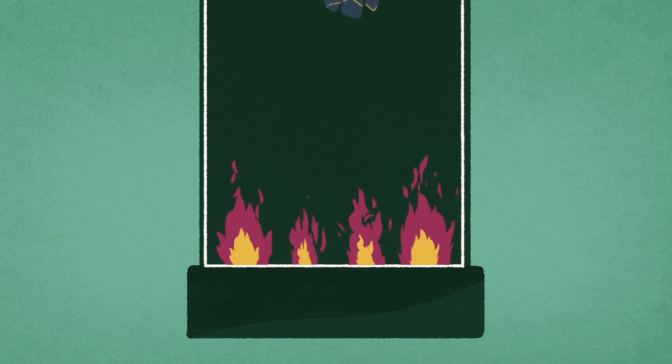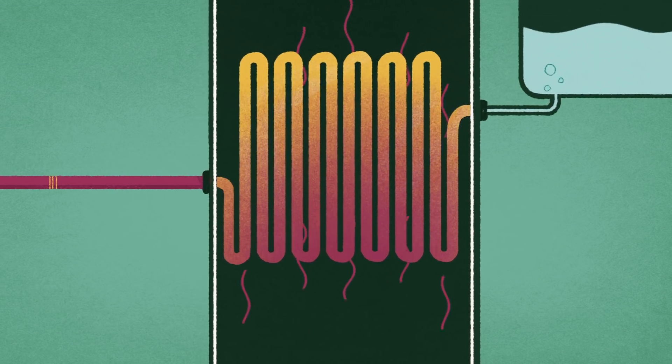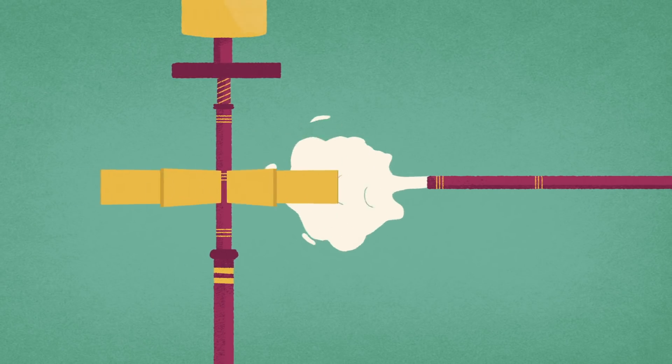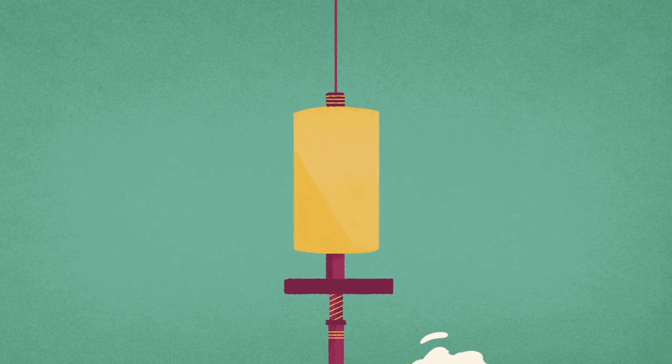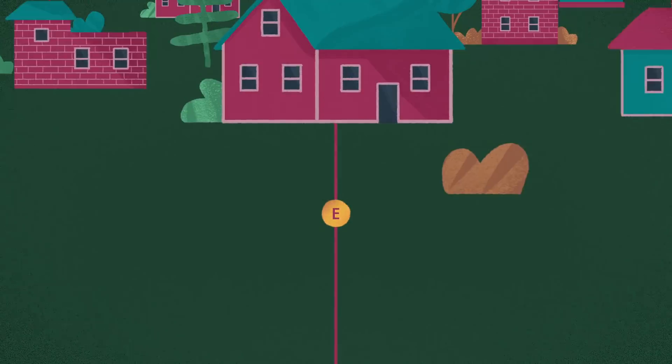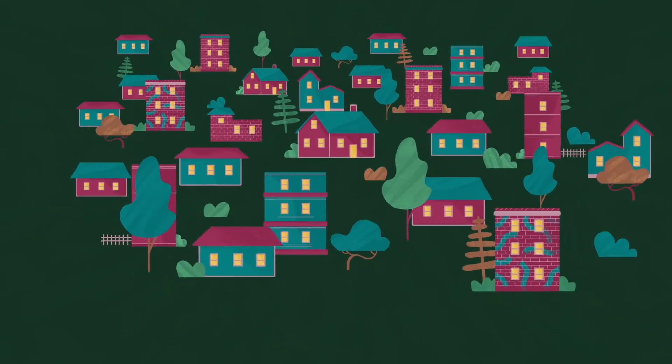You flip a switch. Coal burns in a furnace which turns water into steam. That steam spins a turbine, which activates a generator, which pushes electrons through the wire.